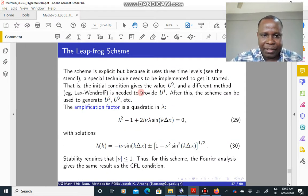So often what happens is that the initial condition gives you the u at 0, like when n is 0. And then you have to use a different method, like the Lax-Wendroff, which is also second order. And then use that to give you the u at level 1.